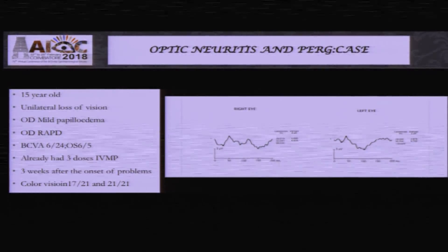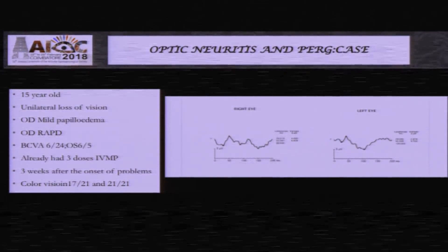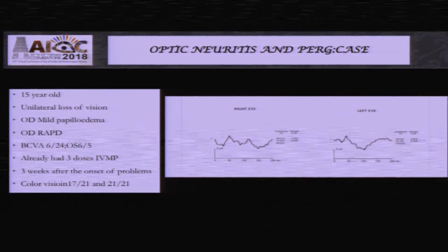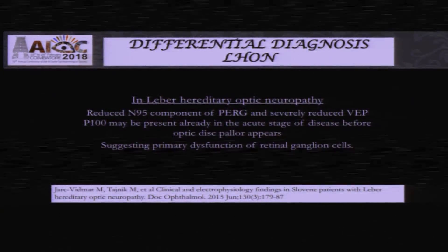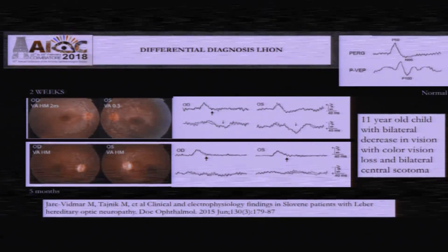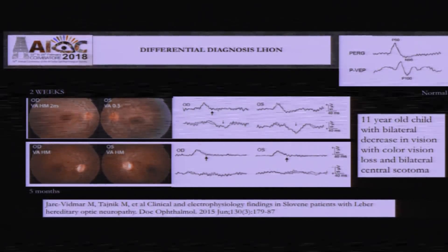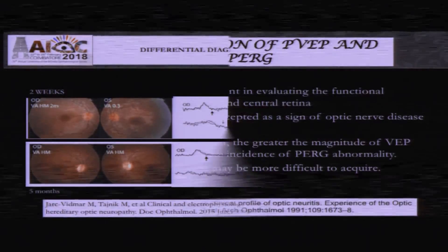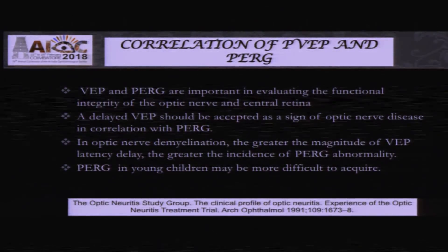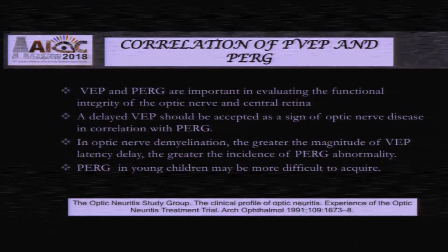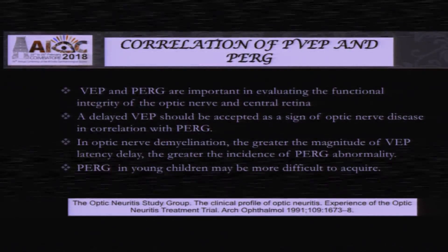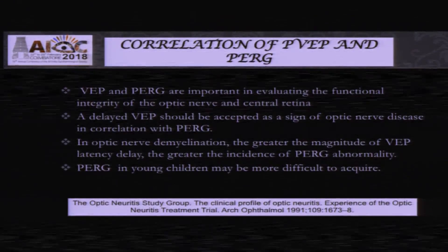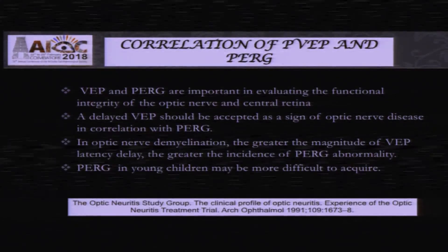This is also a case of a 15-year-old where in the left eye the N95 is absent — it just does not leave the baseline to go below. In LHON also, pattern ERG can be extremely useful. From the beginning stage, you will have N95 missing even in the acute stage of the disease. It is important when evaluating pattern VEP and pattern ERG that both are evaluated together to look at the integrity of the optic nerve and the central retina. A delayed VEP should be accepted as a sign of optic nerve disease only if the pattern ERG is also abnormal.